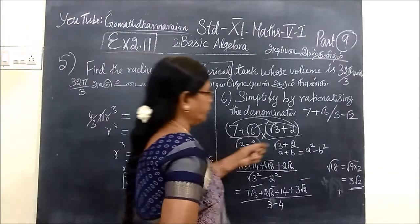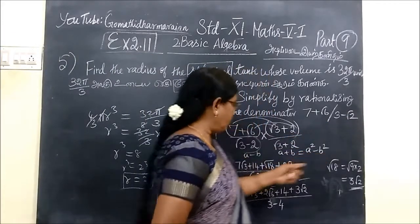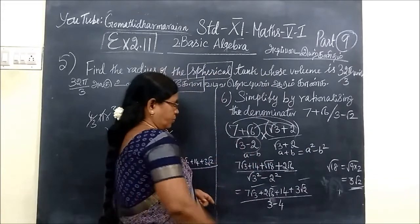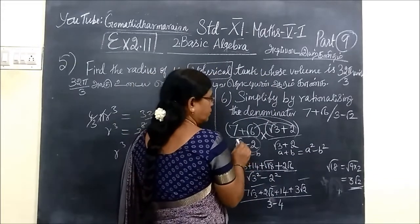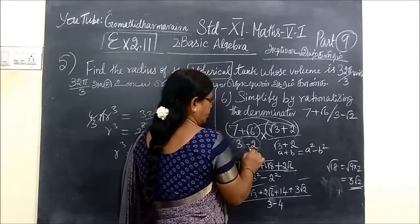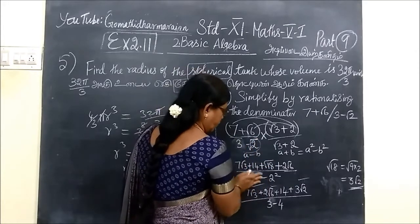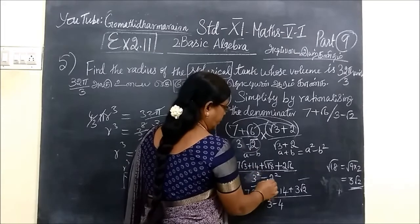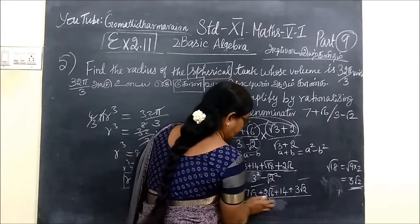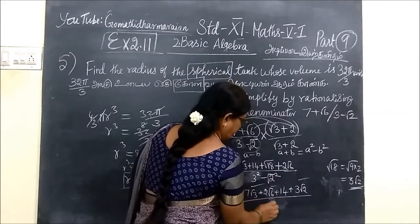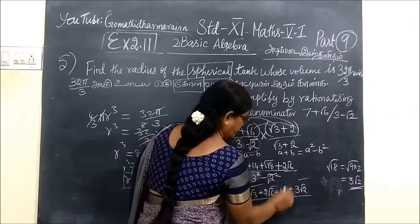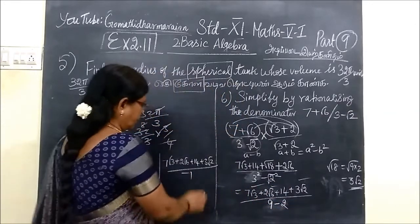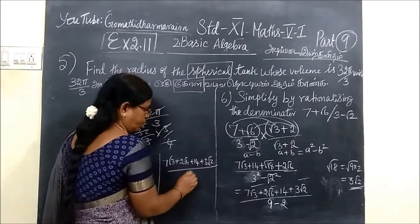So the question was 3 minus root 2 but I have written root 3 minus 2. So this is 3 minus root 2. So here you can write, so now 3 squared minus root 2 squared, so this is nothing but 9 minus 2. So here the answer for this is 7.